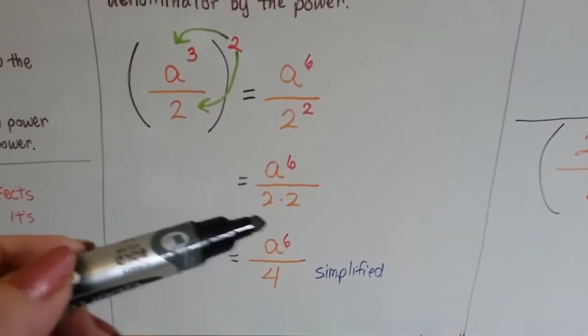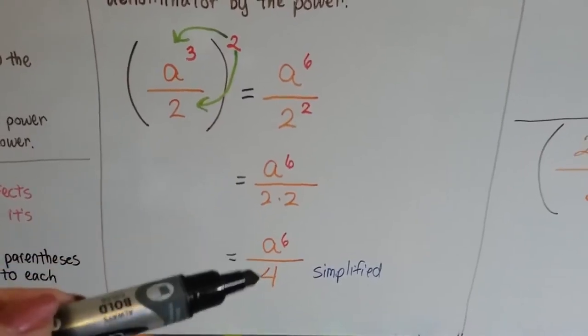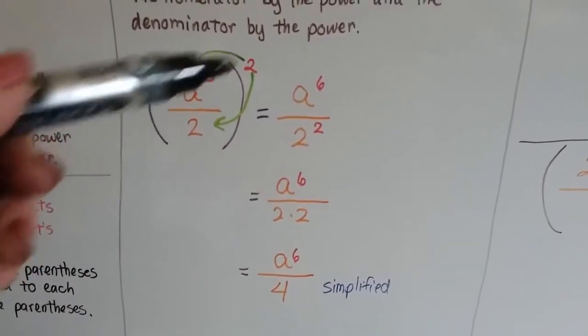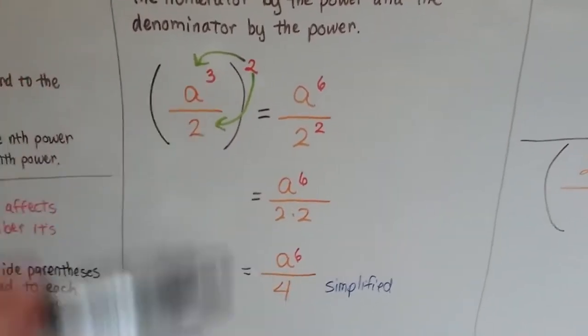So now, simplified, we've got a to the sixth power, because we don't know what a is, it stays the same, over 4. And now it's simplified. See how we did that? a to the sixth over 2 times 2 is 4.